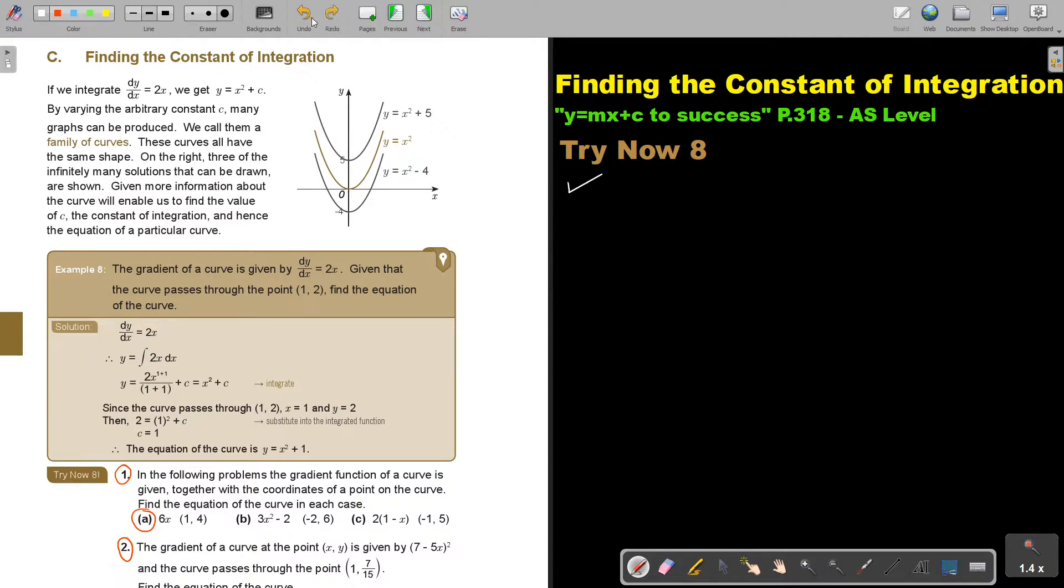In the following problems, the gradient function of a curve is given together with the coordinates of a point on the curve. Find the equation of the curve in each case. So basically, that function that they gave you is dy by dx. So therefore, y will be if I integrate this function.